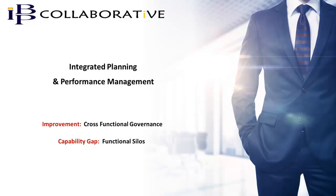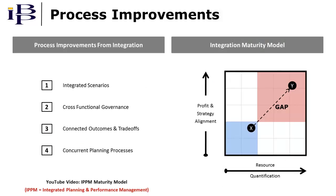This video provides an overview of cross-functional governance and the ability to address functional silos within planning and performance management processes. In a separate video, we provided a detailed description of the maturity model shown on the right side of the screen. It provides a more detailed description of the capability gaps addressed by integration-enabled process improvements shown on the left side of the screen.